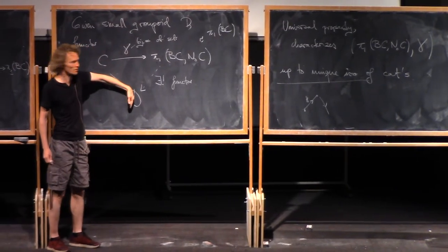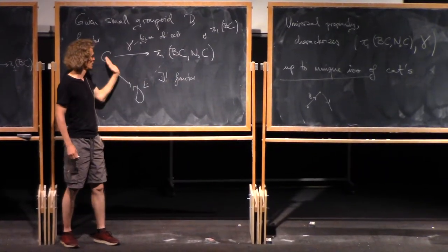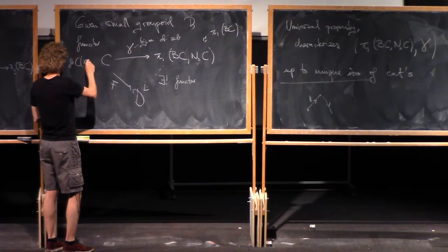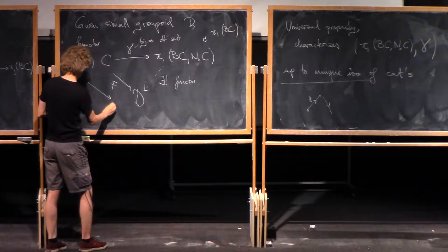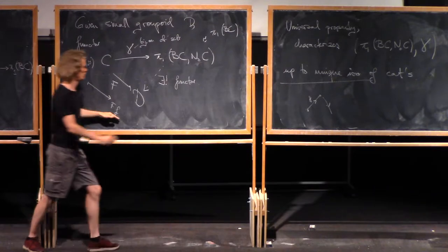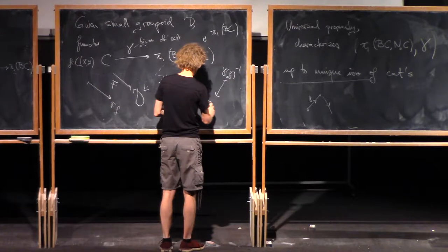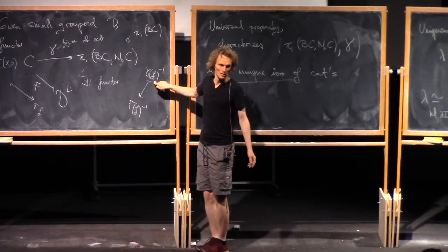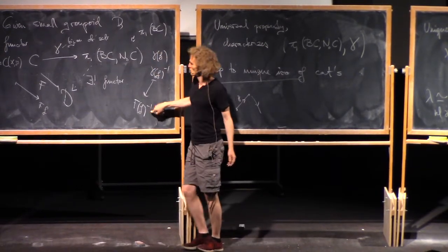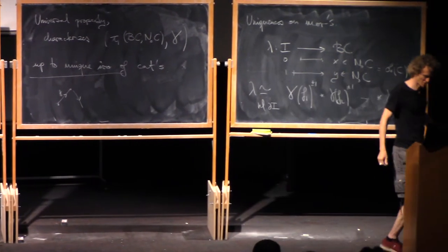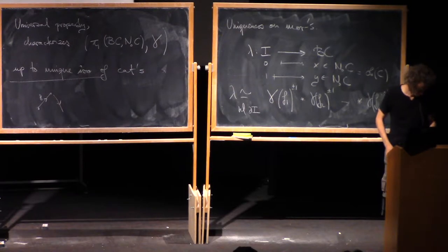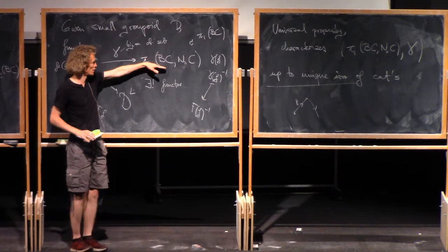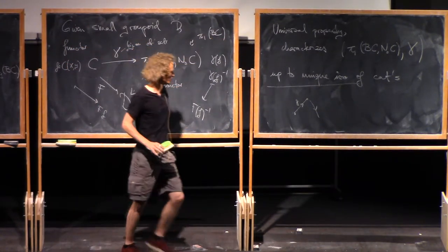If this is supposed to be a functor, the diagram must commute: γ(f) must go to F(f) for any morphism f in C from x to y, and γ(f)^{-1} must go to F(f)^{-1}, which makes sense because this is a groupoid. Since any morphism is a composition of things of this form, there's at most one option — and then you check that it works. So that characterizes this one uniquely up to isomorphism, and therefore this one up to equivalence of categories by a universal property.